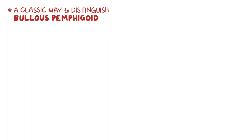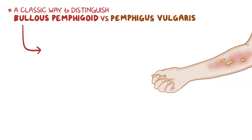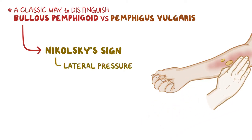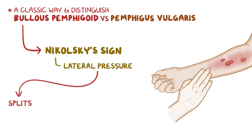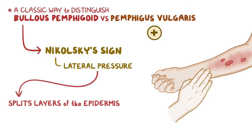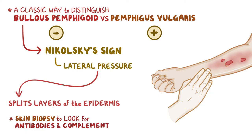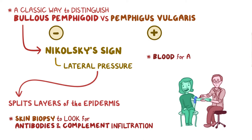A classic way to help distinguish bullous pemphigoid from other skin diseases like Pemphigus vulgaris is the Nikolsky sign, which is when lateral pressure is applied to the lesion and it causes a split to form between the upper and lower layers of the epidermis. In bullous pemphigoid, the skin doesn't split — Pemphigus vulgaris will have the Nikolsky sign, but bullous pemphigoid won't. A skin biopsy can also be done to look for evidence of antibodies and complement infiltration, and the blood can be checked for autoantibodies against BPAG1 and BPAG2.